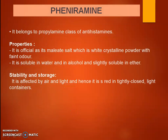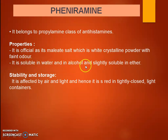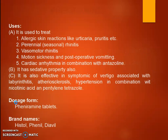Next drug is pheniramine. It belongs to the propylamine class of antihistamines. Properties: it is official as its maleate salt, which is a white crystalline powder with a faint odor. It is soluble in water and alcohol, and slightly soluble in ether. Stability and storage: it is affected by air and light, hence it is stored in a tightly closed, light-resistant container.